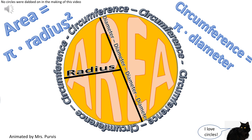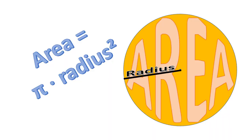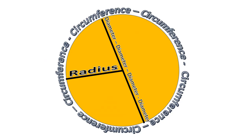Pi r squared sounds like area to me, when I need a circumference I'll just use pi d.